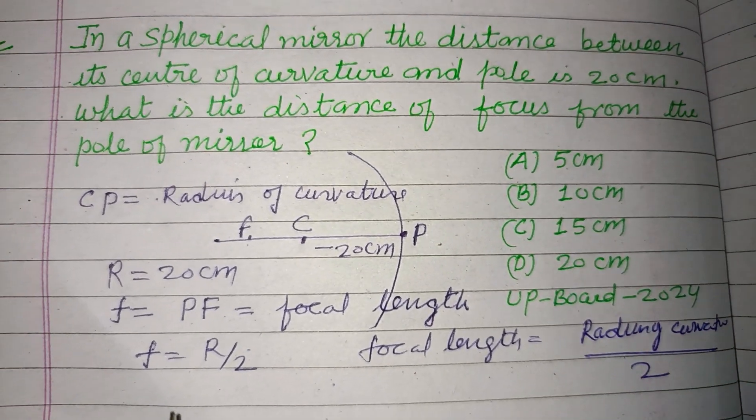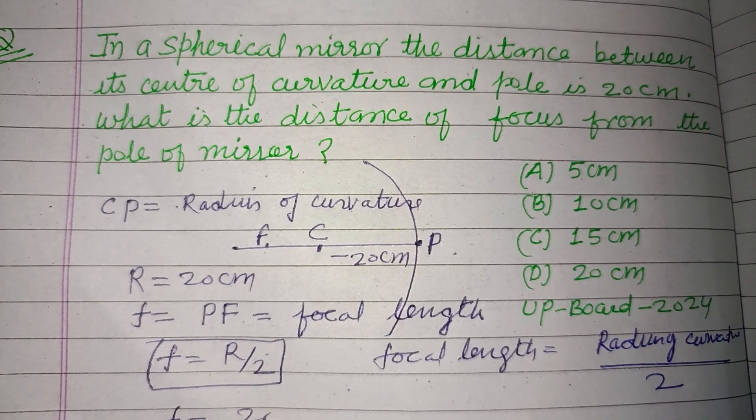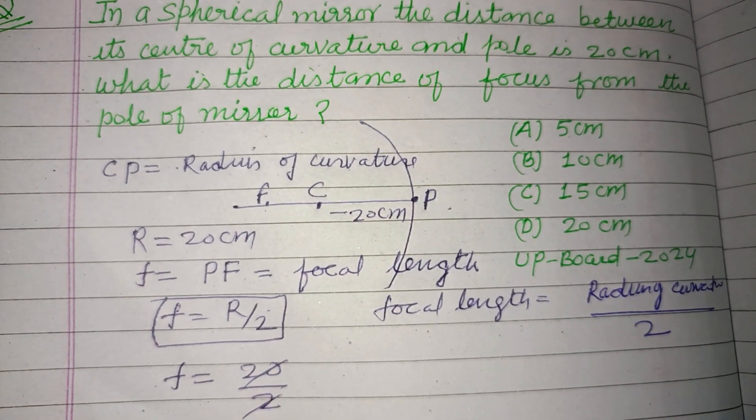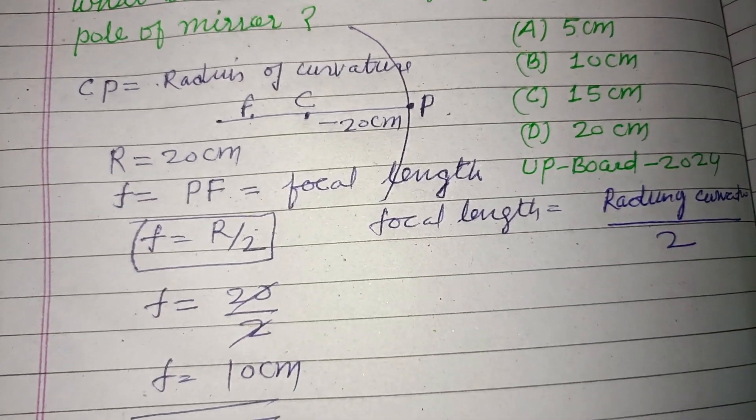This is the relation between focal length and radius of curvature: F equals R by 2. R is 20 centimeters divided by 2, therefore F equals 10 centimeters.